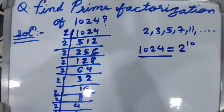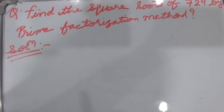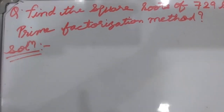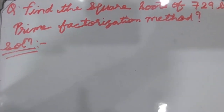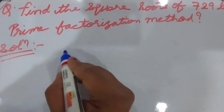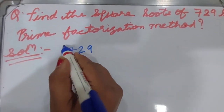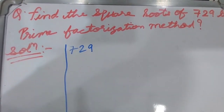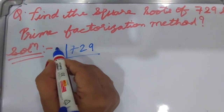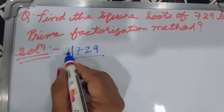Welcome to my YouTube channel. Today we find the square root of 729 using the prime factorization method. First you take the prime factorization of 729.